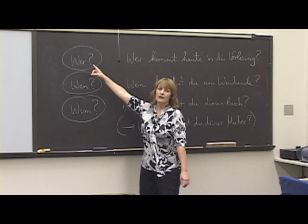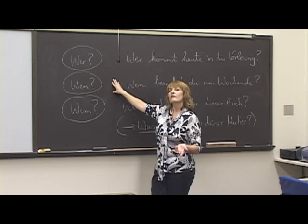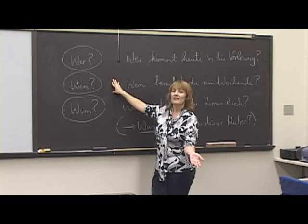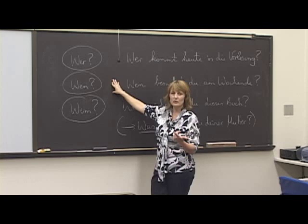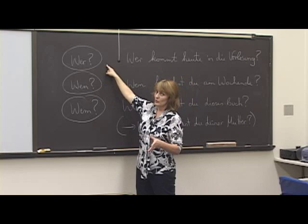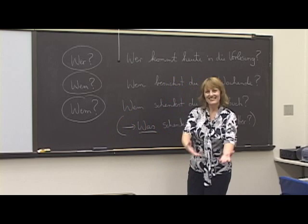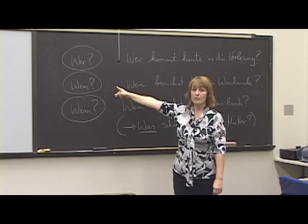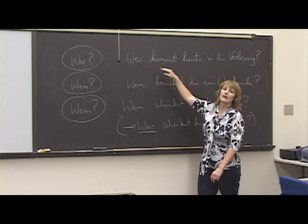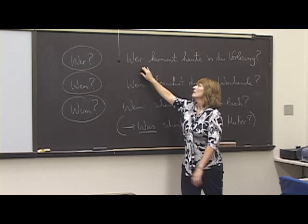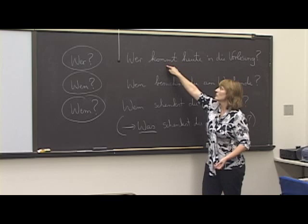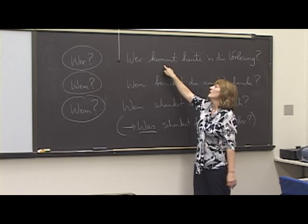Now let's go to the question words — the interrogative pronouns — in the dative case. We already know that wer is 'who' and wen is 'whom.' If you know the difference between who and whom, you know when to use wer versus wen. When you ask a question with wer, you're looking for the subject: Wer kommt heute in die Vorlesung? Wer schreibt eine E-mail? Wer besucht mich? You want to know who is doing the action of the verb.